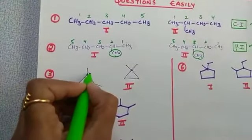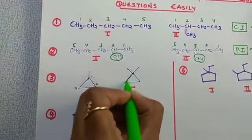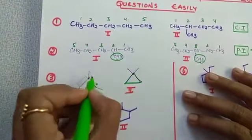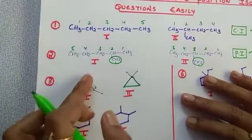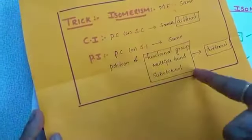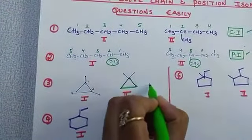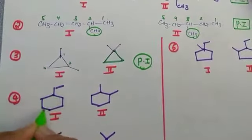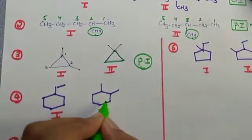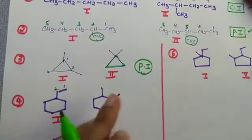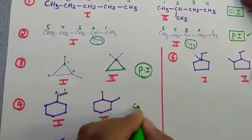Third question: both structures have 3 carbons in the parent chain and side chains of 1 carbon each. Parent chain and side chain are the same, but the position is different — so these two are position isomers. Example 4: cyclohexane has 6 carbons in the ring; the other structure also has 6 carbons in the ring. The parent chain is the same, but one has a side chain of 2 carbons and the other has 1 carbon — so these two are chain isomers.